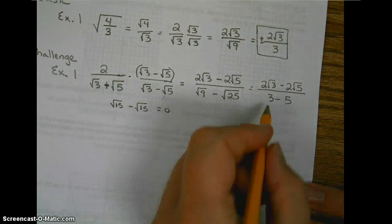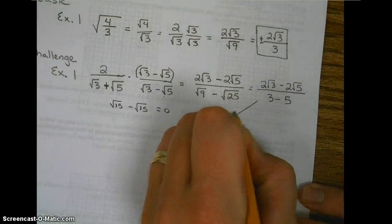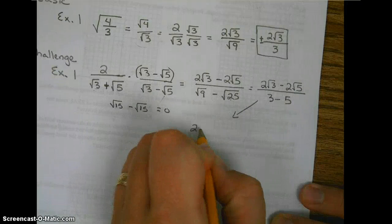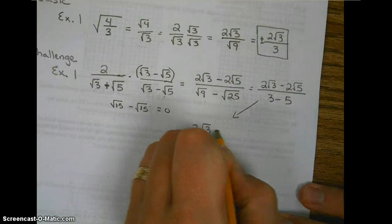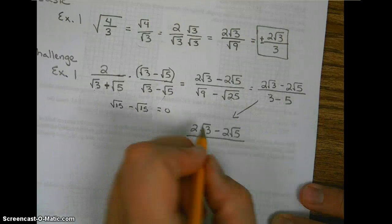So now we are going to continue to simplify here. 2 radical 3 minus 2 radical 5 over 3 minus 5 is negative 2.